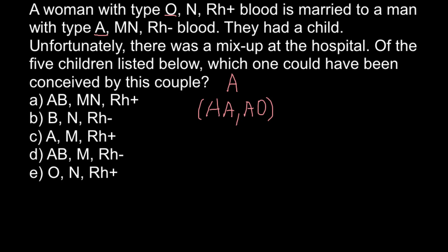Next is blood group B, which can also be made by two genotypes: BB and BO. And the third blood group is AB, which is made by only one genotype: AB.